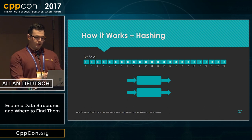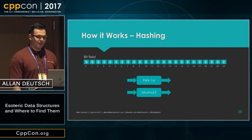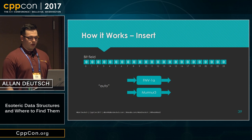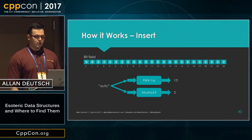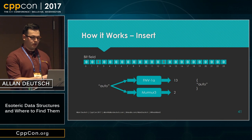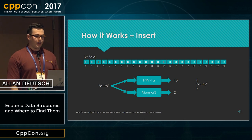For the hashing, we have two nice hash functions — I chose to give them cute names like fnv1a and murmur3. To insert something, say 'auto', it goes through those hash functions and you get some sort of value out. Then you find the bits that correspond to those values at those indexes, and go ahead and set them to one. I have a little set on the right side to keep track of the elements we've added for later.